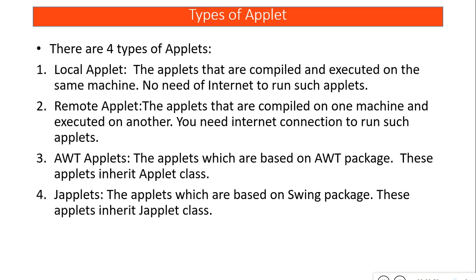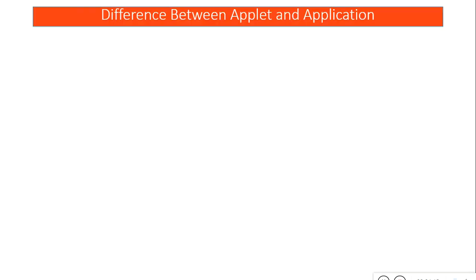Applets can also be created using two ways: AWT applets and JApplets from the Swings package. In this video we'll cover AWT applets. JApplets are the same — there is not much difference between AWT applets and JApplets, it is just an advancement of features and controls. So we have four types of applets: local, remote, AWT, and JApplets.